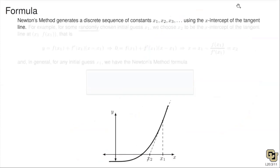So how do we find the formula? What's nice about Newton's method is it's an algorithm — once we find the formula one time, that's the only formula we'll ever have to use. It's very algorithmic once we establish it. The formula is not difficult at all — we're going to find the tangent line and find its X-intercept.